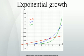Other growth rates: In the long run, exponential growth of any kind will overtake linear growth of any kind — the basis of the Malthusian catastrophe — as well as any polynomial growth. There is a whole hierarchy of conceivable growth rates that are slower than exponential and faster than linear in the long run. Growth rates may also be faster than exponential. In the above differential equation, if k < 0, then the quantity experiences exponential decay.